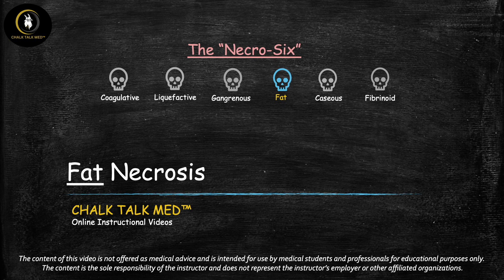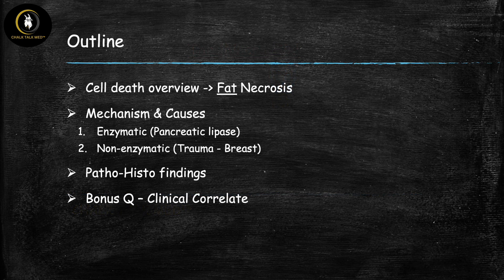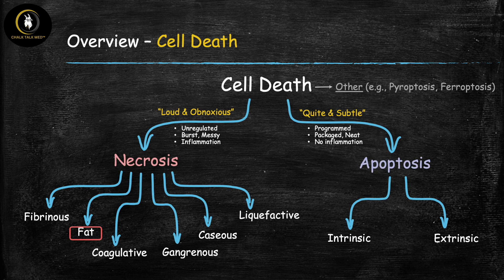Hi everyone, welcome to Chalk Talk Med, where I cover high-yield medicine topics for students. In this video we're going to be talking about fat necrosis. Here's an outline of our talk: we'll start with an overview of cell death and see where fat necrosis fits in, then we'll talk about the mechanism and causes — there are two major types, enzymatic and non-enzymatic — then key findings on gross pathology and histology, and finally a bonus question with a clinical correlate.